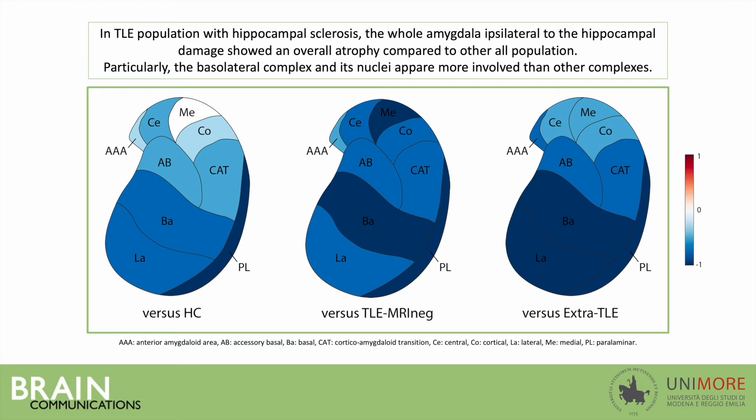Regarding the amygdala, in TLE patients with hippocampus sclerosis, the whole amygdala ipsilateral to the hippocampus damage showed an overall atrophy compared to all other populations. Particularly, the basolateral complex and its nuclei appear more involved than other complexes.